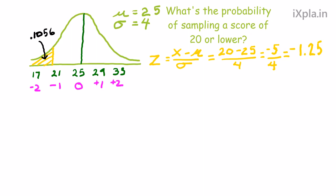And you know it's a tail because it's smaller of the two portions that the line made. And now we see that it's slightly more than 10% or 10.5% of all possible scores that could be sampled are going to be equal to 20 or less than 20. So the probability of sampling one score is about 1 in 10.